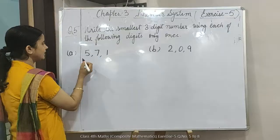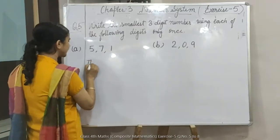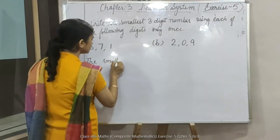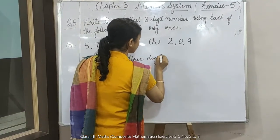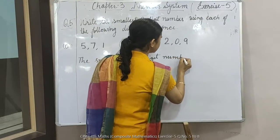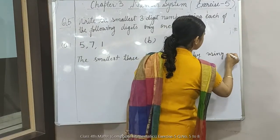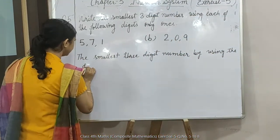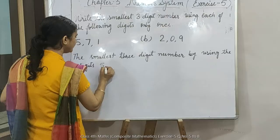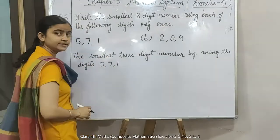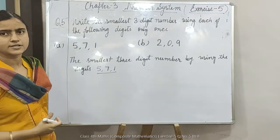तो इस तरीके से आप करेंगे। देखें, 2 examples लिए आपके। 3-digit number by using the digits — आपको digits दिये हैं: 5, 7, 1। तो अब आप क्या करेंगे, इन digits को increasing order में arrange कर लेंगे।